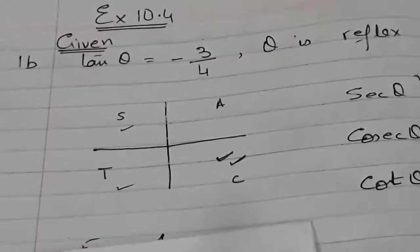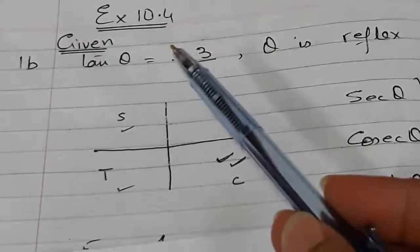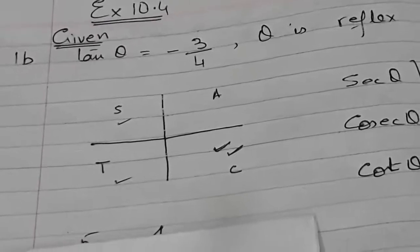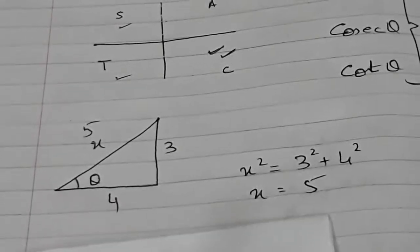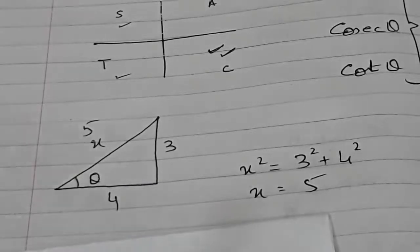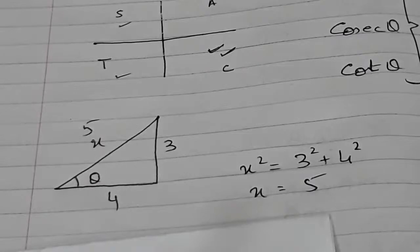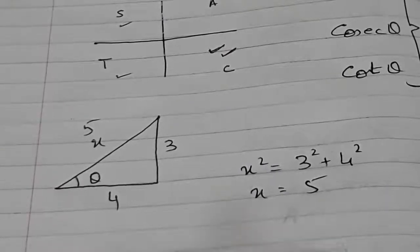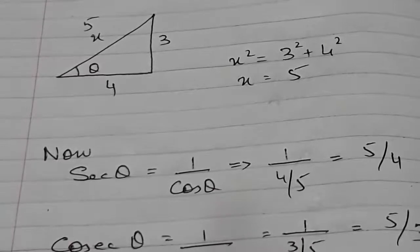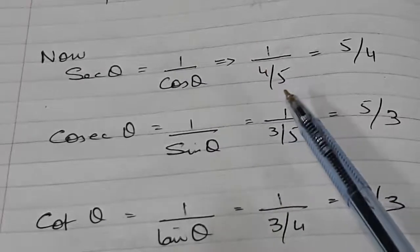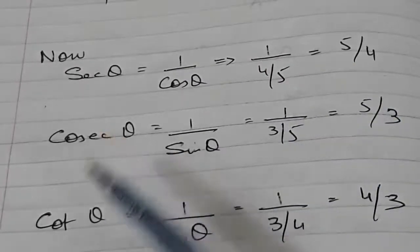From tan θ = −3/4, I will forget the minus sign and just pick up 3/4 and draw a triangle, because the minus sign was just there to help me find the quadrant. I have written 3 over 4 and by Pythagoras theorem found the hypotenuse x. I need the hypotenuse to answer sec θ, cosec θ, and cot θ. Sec θ = 1/cos θ; from Pythagoras we know cos θ = 4/5, so sec θ = 5/4. Similarly we compute cosec θ and cot θ.